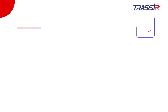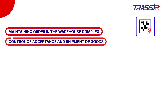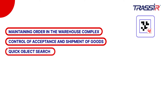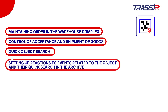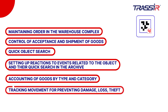The Traseo Aruko module detector is used for quick product search in an archive, accounting for the type of goods, pallets, and any production workpieces and parts, as well as tracking of goods movement at a warehouse or in a production area.